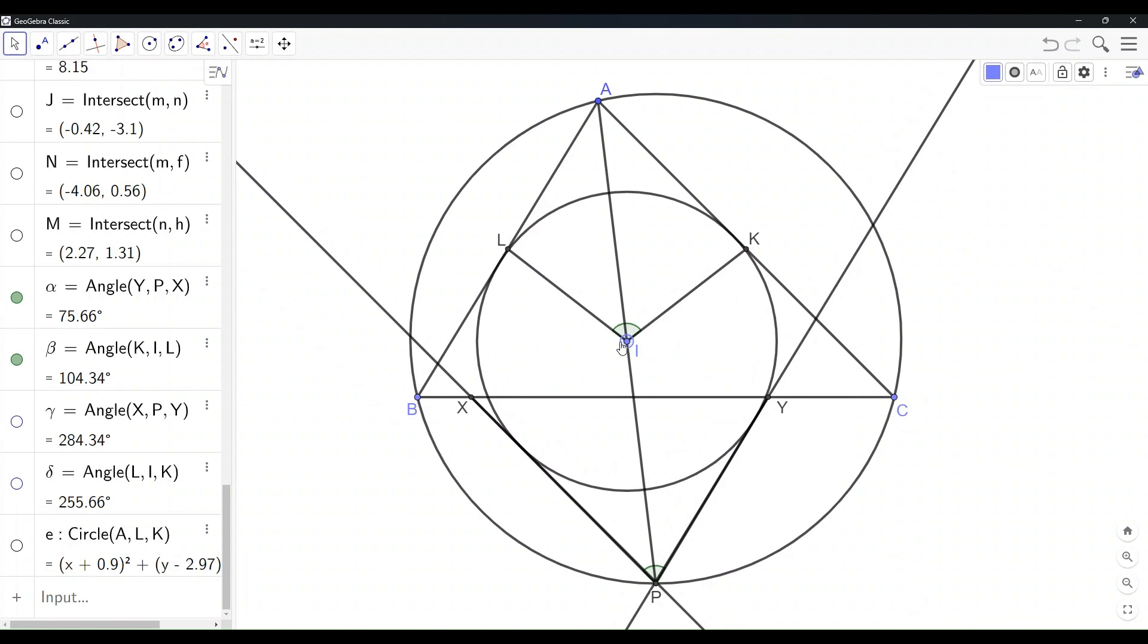This is an interesting special case. Two pairs of parallel lines form a parallelogram. So angle A is congruent with angle P, which is originally XPY. What we need now is to prove angle A plus angle LIK equals 180 degrees. This is equivalent to ALIK being cyclic.